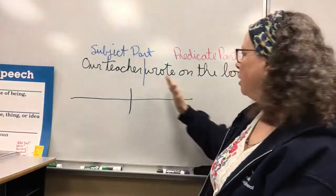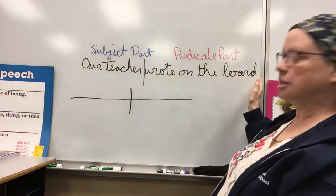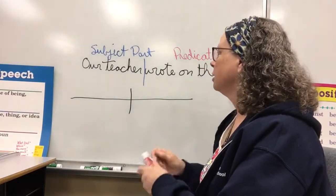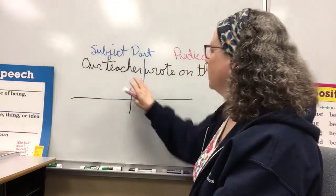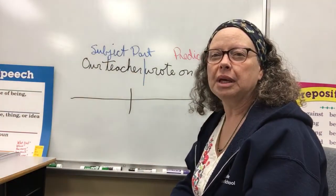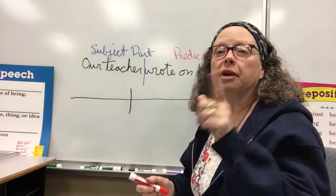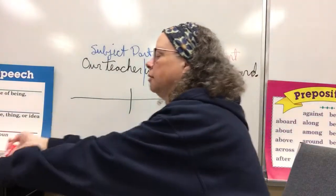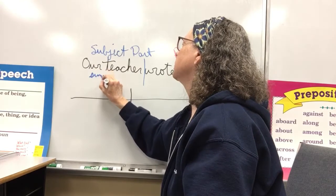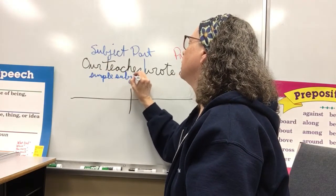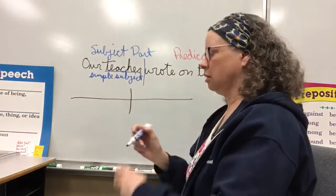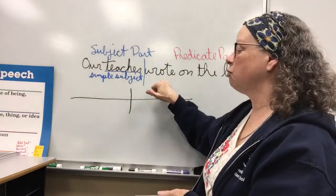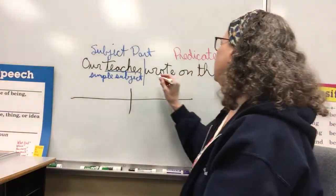The next part, 'wrote' — this whole part right here — is the predicate part. The predicate part starts at the verb and goes all the way to the end of the sentence. Now, instead of having both of these words be the subject part, if I just wanted the main who or what word, we call that the simple subject. So the simple subject would just be 'teacher,' and then what the simple subject is doing — what did the teacher do? She wrote. So your simple predicate is 'wrote.'